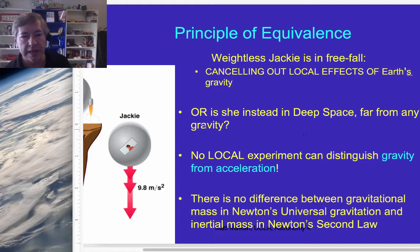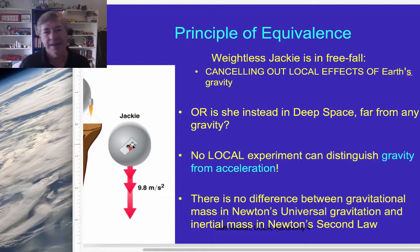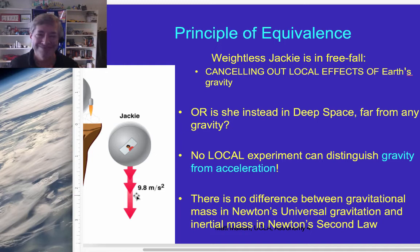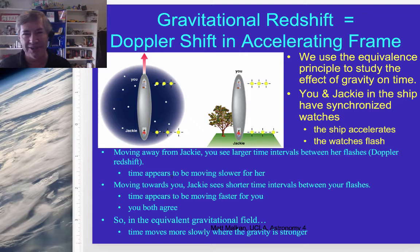Now apply this to light — this is where things get really fun. No experiment is going to tell the difference between gravity and acceleration. We have a fancy rocket ship back in space, uniformly accelerating upward with no gravity. This is an open floor plan spacecraft so we can look down to people on the bottom and they can look up to us on the top floor, and we can send pulses of light to each other. Jackie wants to send pulses of light up to us. That light has to travel up to the top floor.